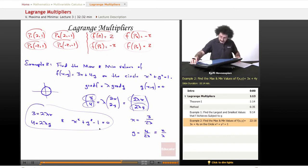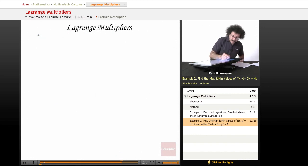I have the function x squared plus y squared minus 1 equals 0. We said that x equals 3 over 2 lambda, so this is going to be 3 over 2 lambda squared plus y equals 2 over lambda squared minus 1 equals 0.